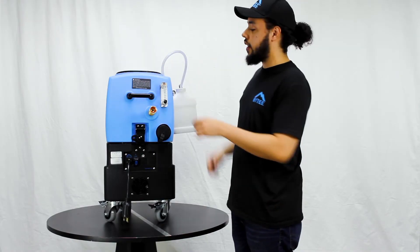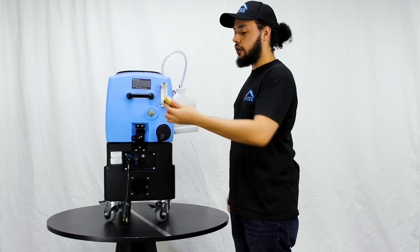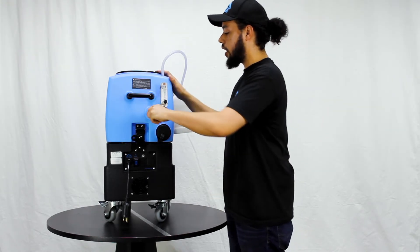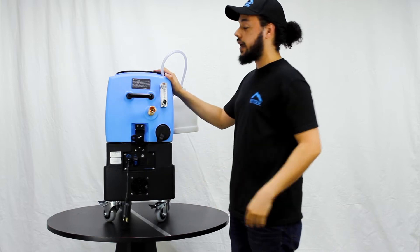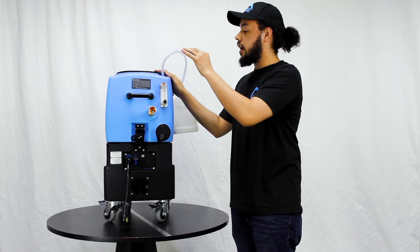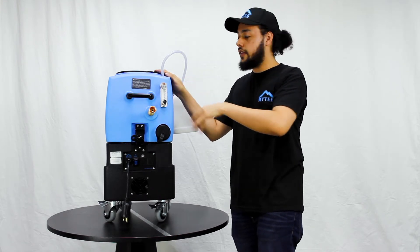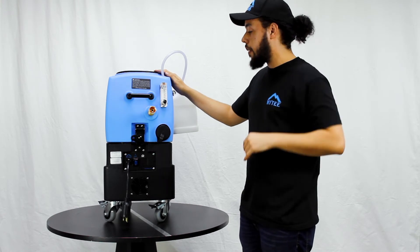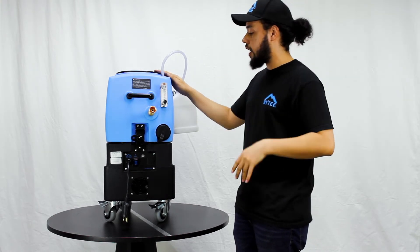Now, this brass fitting right here, this is your autofill adapter. You can connect this to any standard garden hose and connect it right into the back. Let the garden hose run, and it's gonna keep your machine filled with water while there's an auto shut off float that's in there that will keep it from overflowing your machine. So you can just turn it on, forget about it, it'll make sure that you always have water.